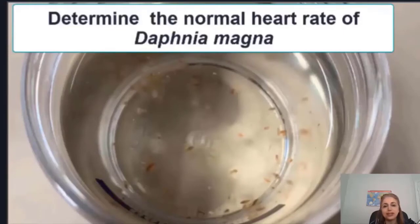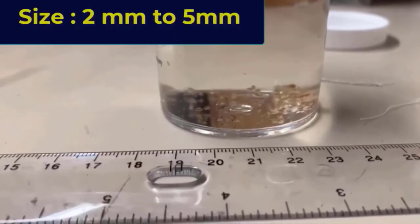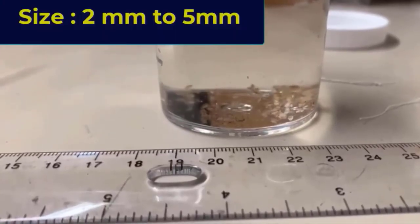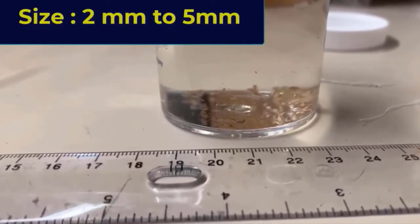A Daphnia is the water flea, a crustacean that lives in lakes or freshwater. It is also an excellent food source for fish. Their size is between two to five millimeters in length.